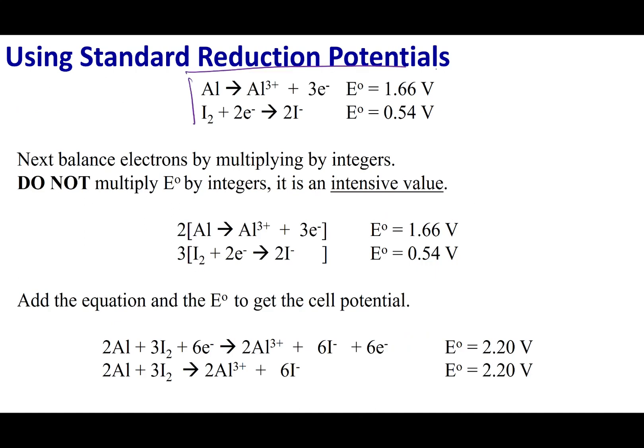So once you have your two half reactions, now you have a redox reaction. You have your oxidation and your reduction reaction. Now, what you're going to do is make sure your electrons are balanced. So in the first reaction, I'm producing three electrons. And in the second reaction, I'm consuming two electrons. So what I'm going to do is multiply the first reaction by two, and I'm going to multiply the second reaction by three.